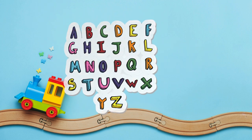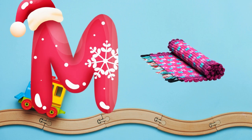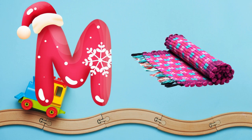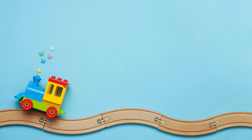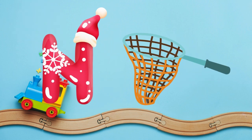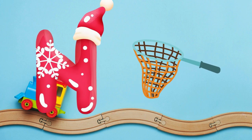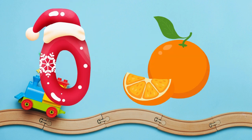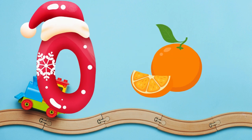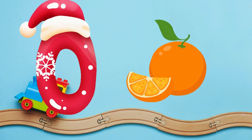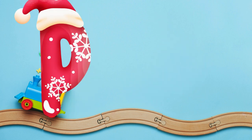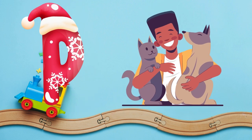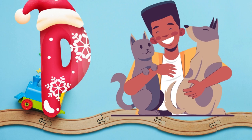M is for mat, m-m-mat. N is for net, n-n-net. O is for orange, o-o-orange. P is for pet, p-p-pet.